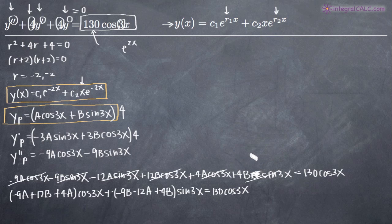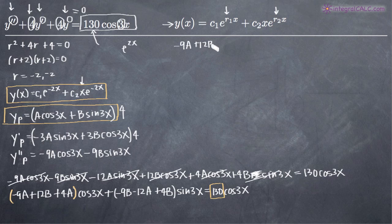Using the method of undetermined coefficients, we set coefficients on the left and right equal to one another. The coefficient in front of cosine on the left must equal 130: so negative 9A plus 12B plus 4A equals 130. And since there is no sine of 3x on the right-hand side, the coefficient in front of sine equals zero: negative 9B minus 12A plus 4B equals 0.